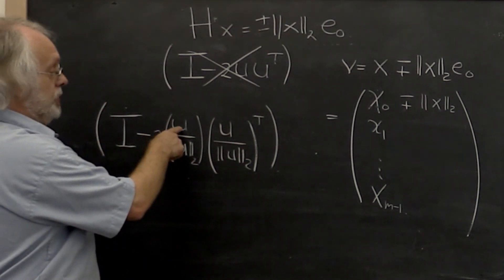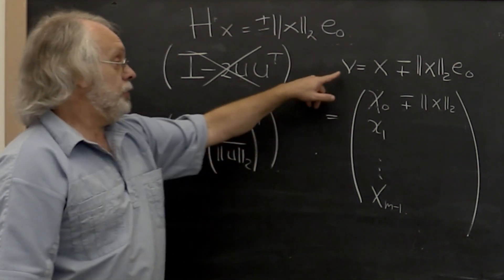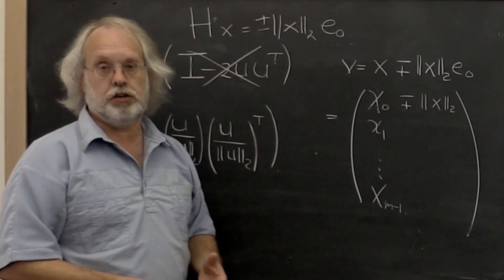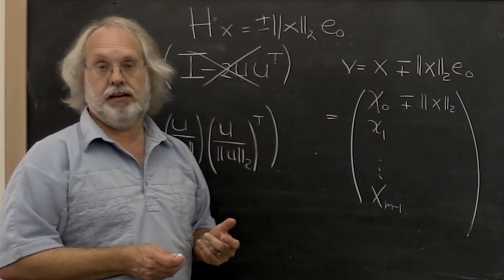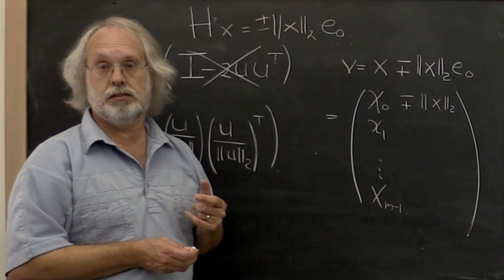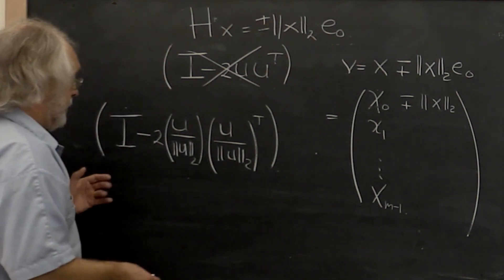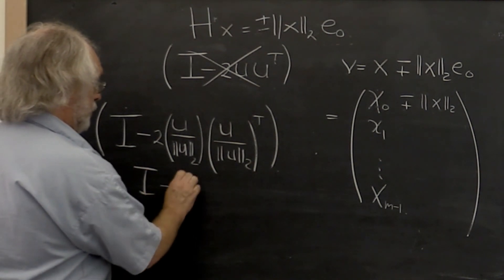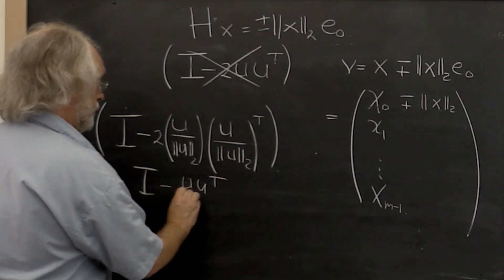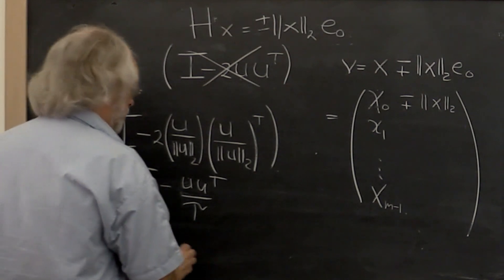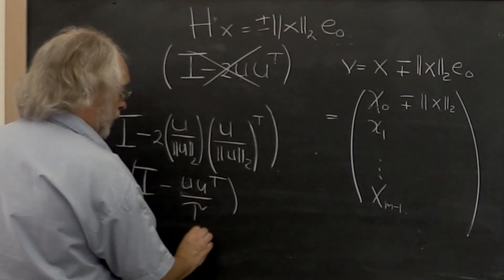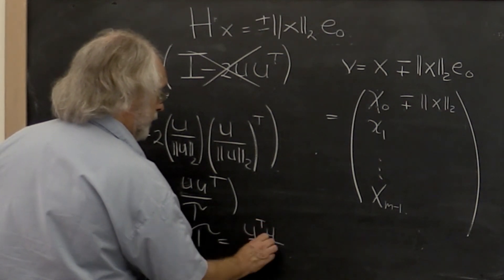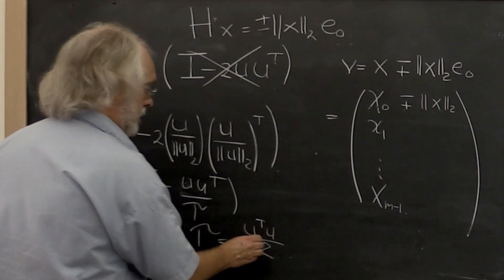We can take u to be in the direction of v but scaled any way we want — as long as we don't scale by zero. This formulation equals I minus 2u u-transpose over tau, where we pick tau equal to u-transpose times u divided by 2.